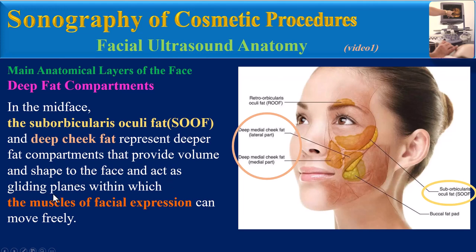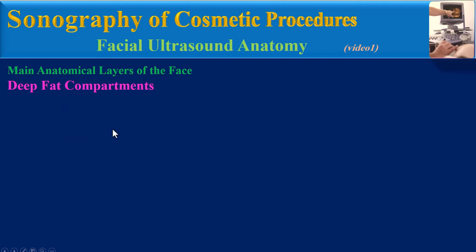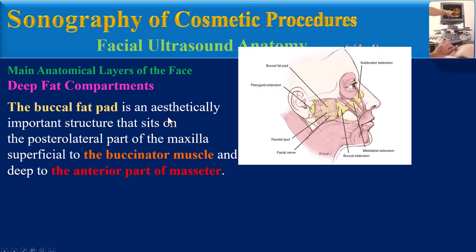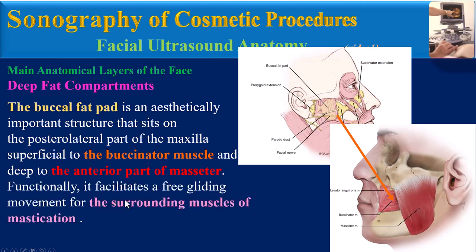These deep fat compartments provide volume and shape to the face and act as gliding planes within which the muscles of facial expression can move freely. Between the SOOF and the zygomatic process of the maxilla there is a gliding space known as the pre-zygomatic space. The buccal fat pad is an aesthetically important structure that sits on the posterolateral part of the maxilla, superficial to the buccinator muscle and deep to the anterior part of the masseter.